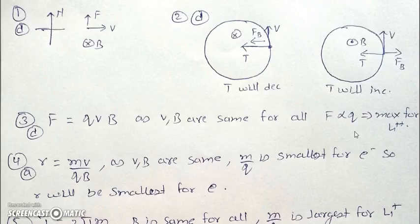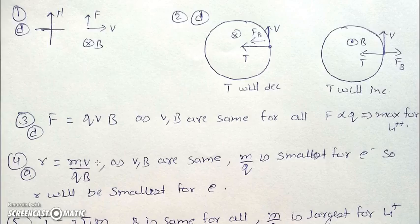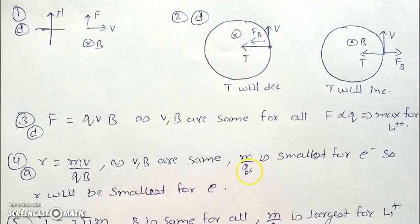In question 4, which of the following particles will describe the smallest circle when projected with the same velocity? The radius of the circle in a magnetic field is defined by R = MV/QB. V and B are the same, so whichever has the least value of M/Q will have the smallest radius. In this case, the electron has the least value of M/Q, so it will have the smallest radius out of all the given four charges.